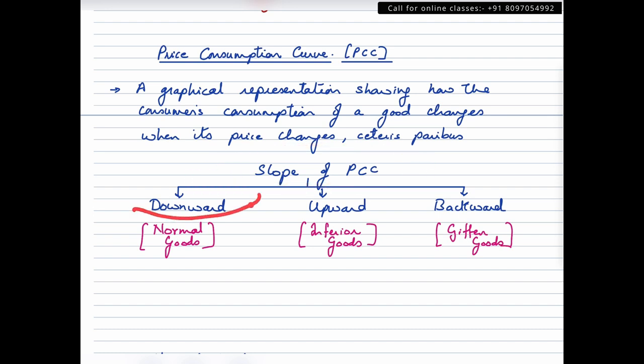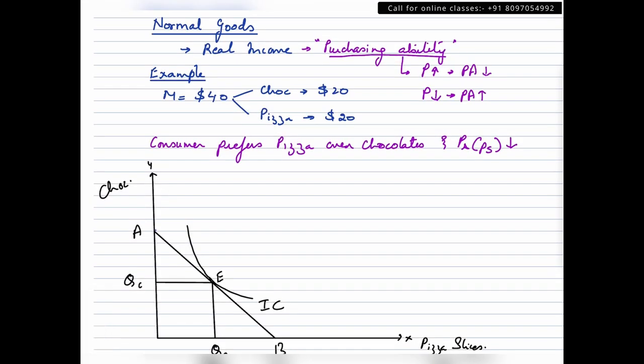The first slope is a downward sloping curve which is generally observed in the case of normal goods. The second type of slope is an upward slope generally observed in the case of an inferior good. A backward slope is generally observed under Giffen goods. Now I would not delve into the meaning of these type of goods. You could check out my Instagram Reels. Let's take a look at downward sloping PCC curve, which is for normal goods. Before we move on to the complete analysis, let's talk about real income first.